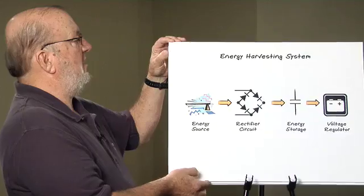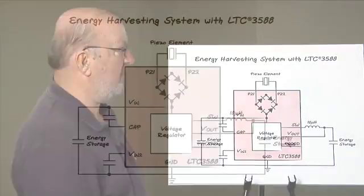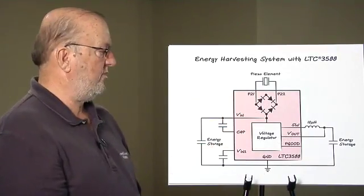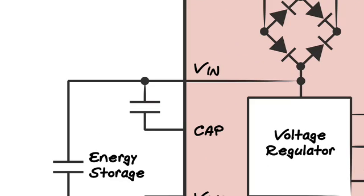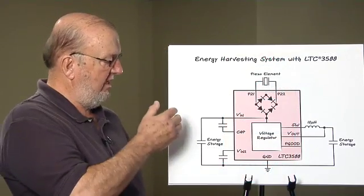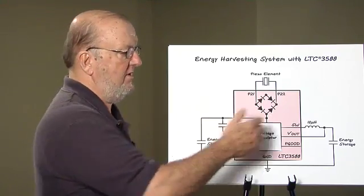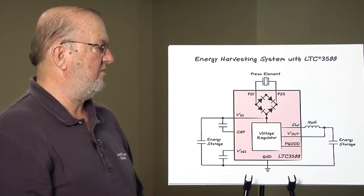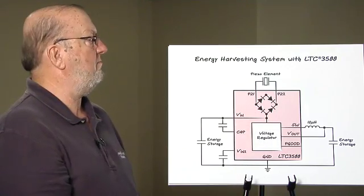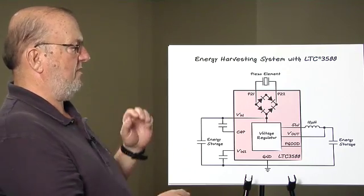The LT3588 is a complete energy harvesting solution for high impedance sources such as piezoelectric elements. Within the LT3588 we have the rectifier circuit, a low current under voltage detection circuit, the DC to DC regulator which converts the energy stored from the input storage device and transfers that charge to an output storage device, and we have all the electronics within this to finish a complete energy harvesting system.